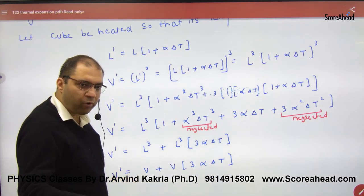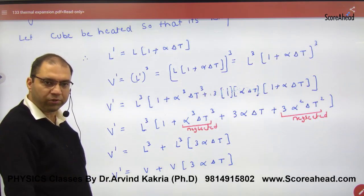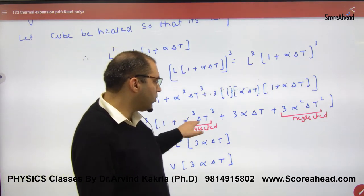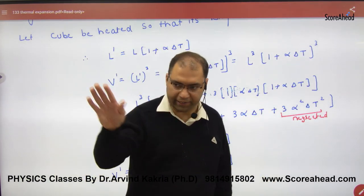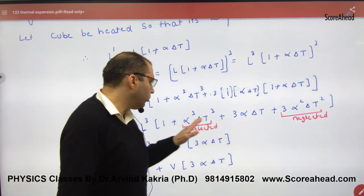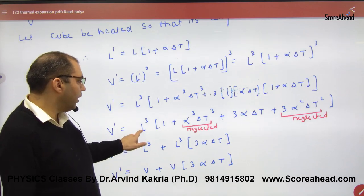Alpha is very small, 0.01, 0.002, like this. Alpha is not bigger, in points. So alpha square and alpha cube will be very small. So this is alpha square and alpha cube, don't work in it, it is neglected. So take these terms.